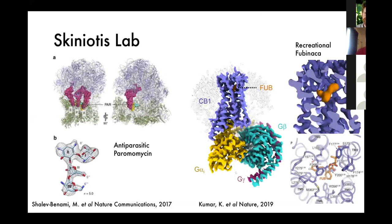In the Skiniotis lab we do a lot of cryo-EM with different liganded biomolecular complexes. For example, this was a structure published in 2017 of the Leishmania ribosome bound to the antiparasitic compound paromomycin, and on the right you have the cannabinoid 1 receptor bound to the recreational cannabinoid compound FUBIMINA. One of the main interests in the lab is trying to push towards structure-based drug discovery with cryo-EM, but a key part of this is that you need to model the ligand very accurately, and there are a couple of challenges compared to crystallography.